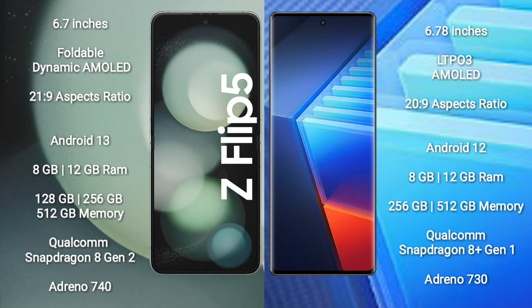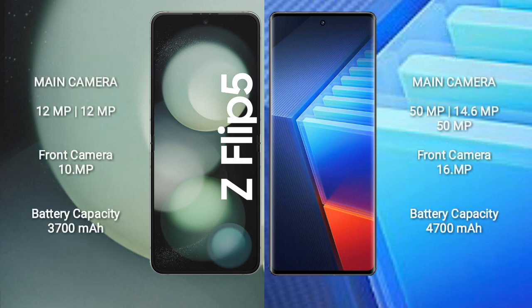The Samsung Galaxy Z Flip 5 comes with 8GB or 12GB RAM and 128GB, 256GB, or 512GB internal storage, with a Qualcomm Snapdragon 8 Gen 2 processor and GPU Adreno 740. The Vivo IQ 10 Pro comes with 8GB or 12GB RAM and 256GB or 512GB internal storage, with a Qualcomm Snapdragon 8 Gen 1 processor and GPU Adreno 730.